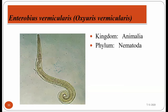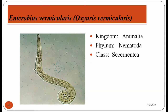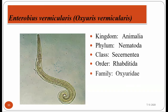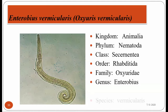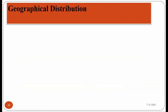They belong to the kingdom Animalia, phylum Nematoda. They have a round body. They belong to the class Secernentea, order Rhabditida. The family is Oxyuridae and the species is Enterobius vermicularis, commonly known as pin, seat, or threadworm.